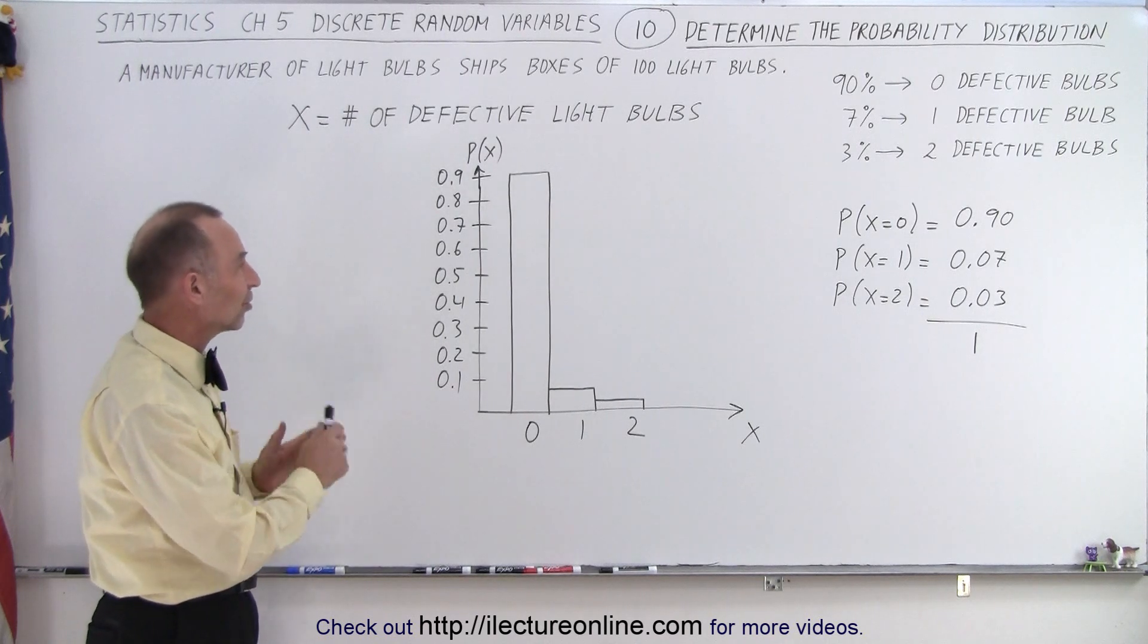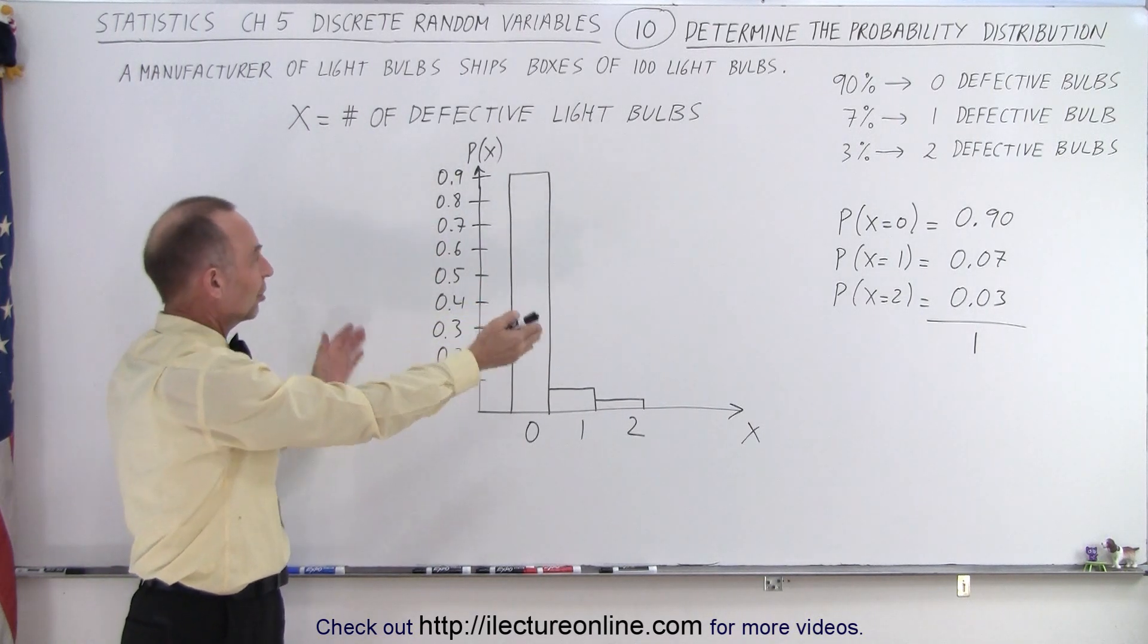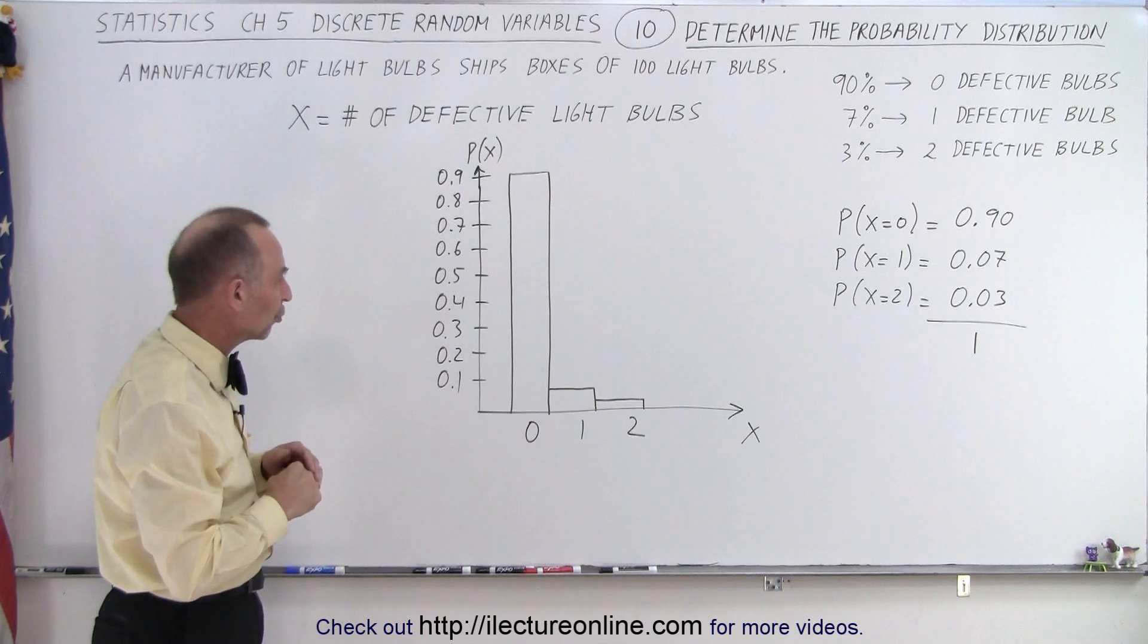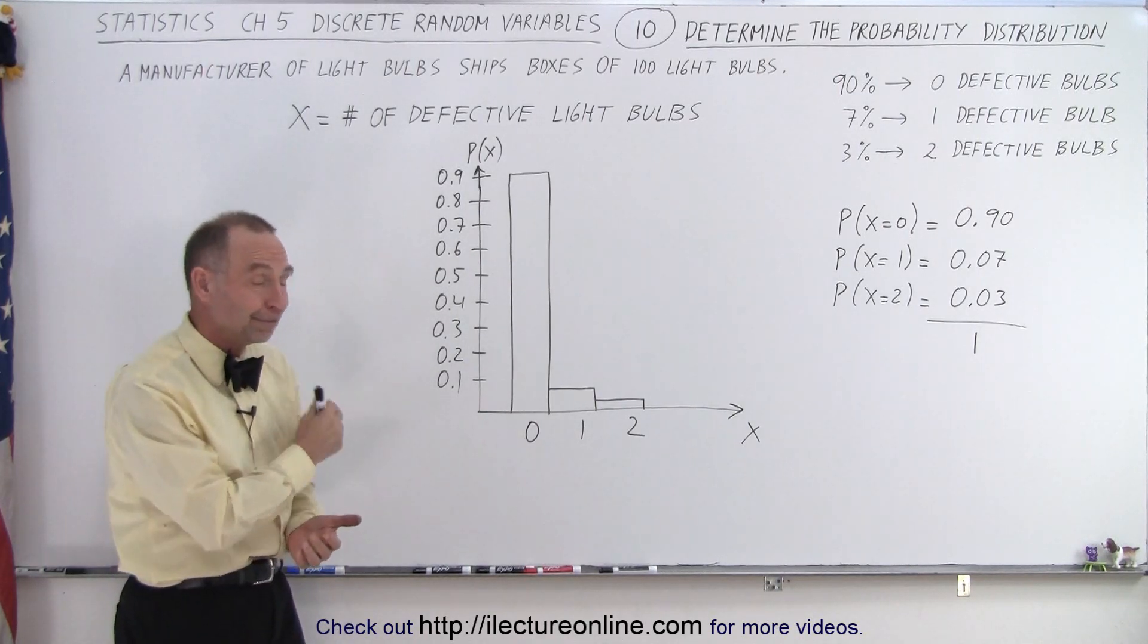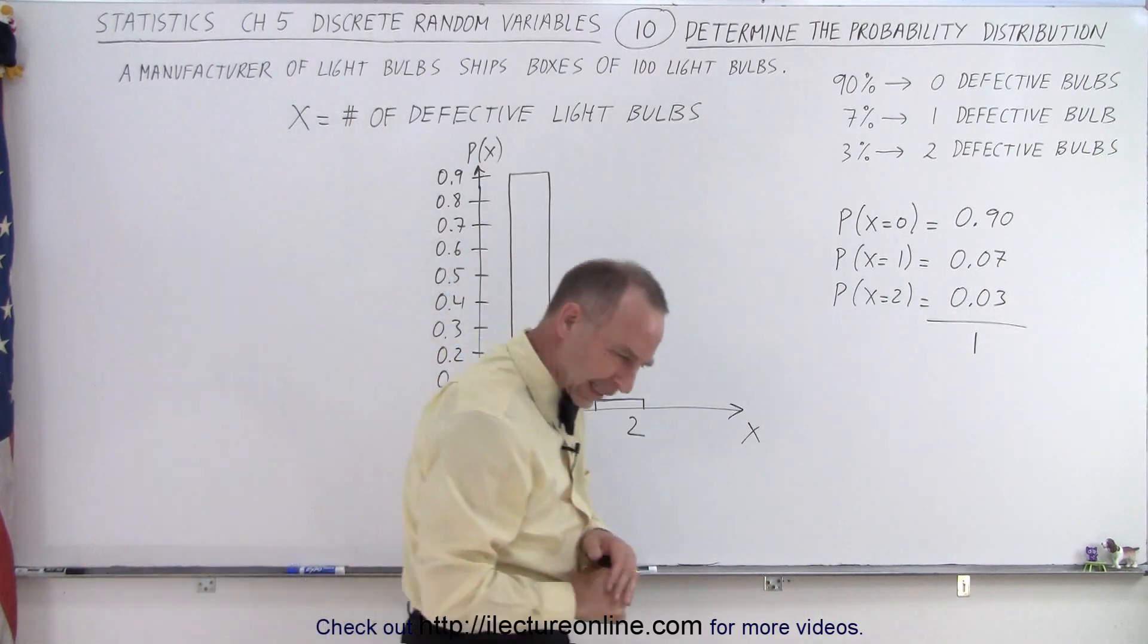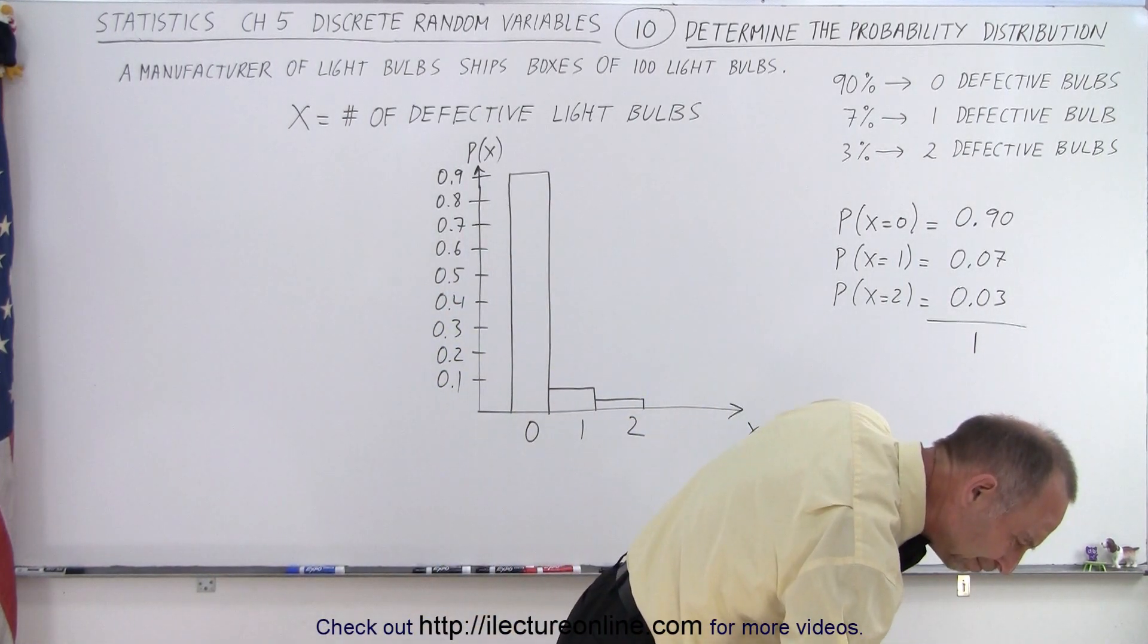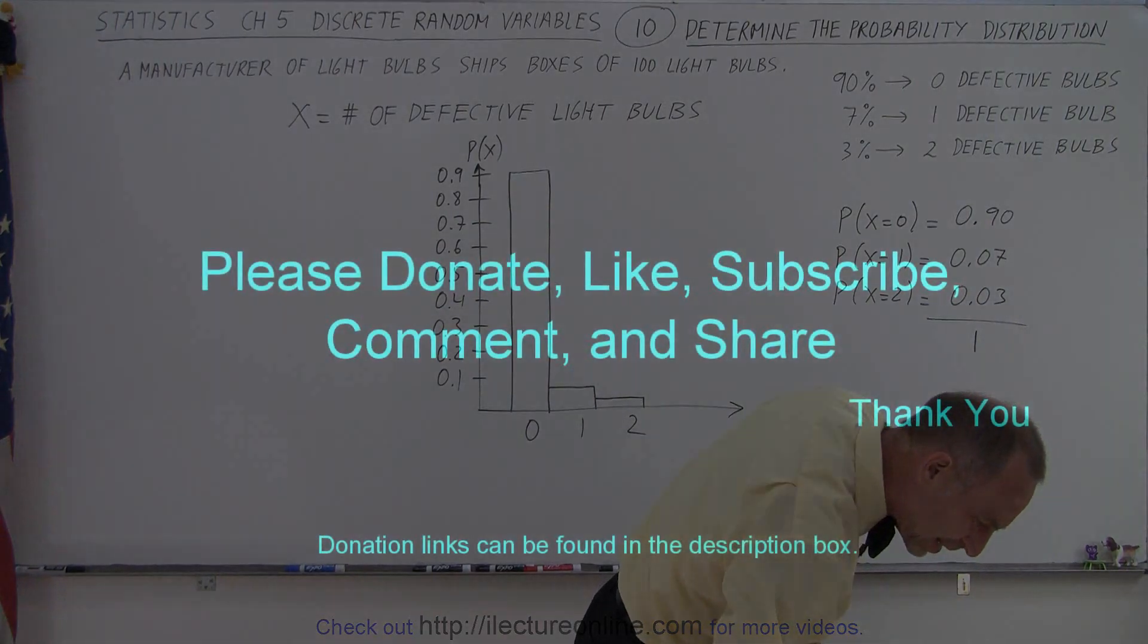But anyway, this is it, this is what it looks like, the probability distribution, and we have the histogram to give us that visual representation of what it looks like. And that is how it's done. Let's see what else we got.